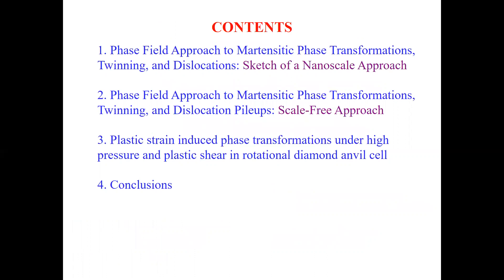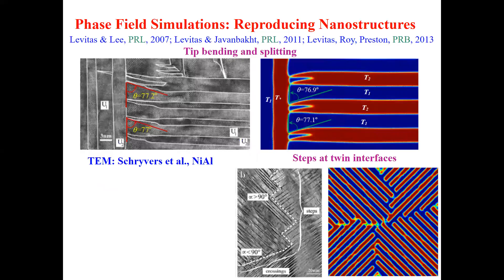A key point is we have at the moment a nanoscale phase-field approach for modeling of interaction between phase transition and plasticity, and our goal is to scale it up. It's not just to consider millimeter or centimeter size — maybe it's kilometer for geophysical problems. We want to make a scale-free approach, and our main application will be plastic strain-induced phase transformations under high pressure and plastic shear in rotational diamond anvils.